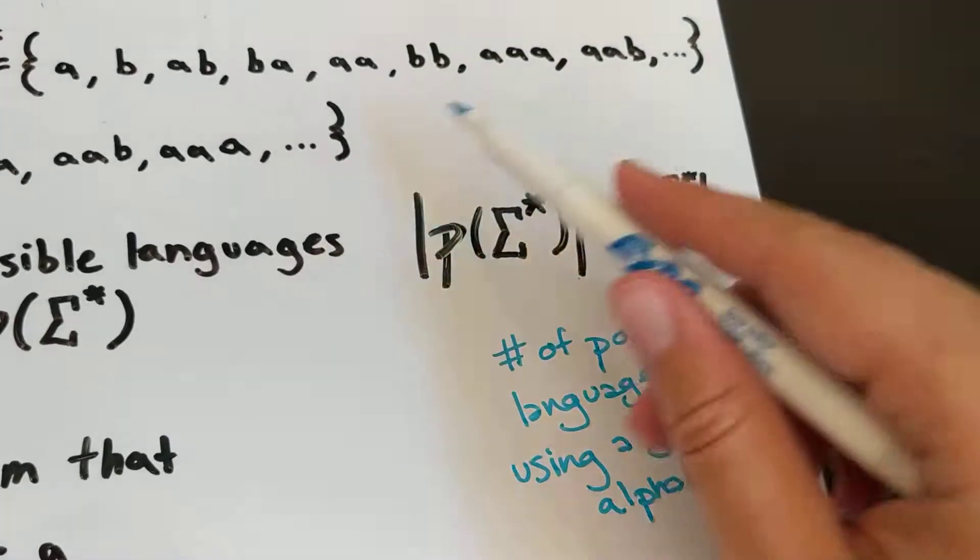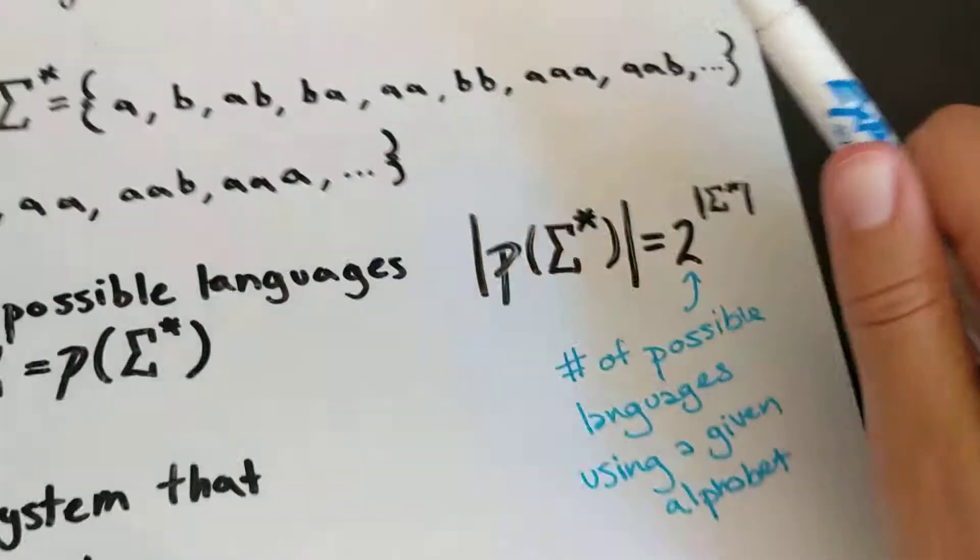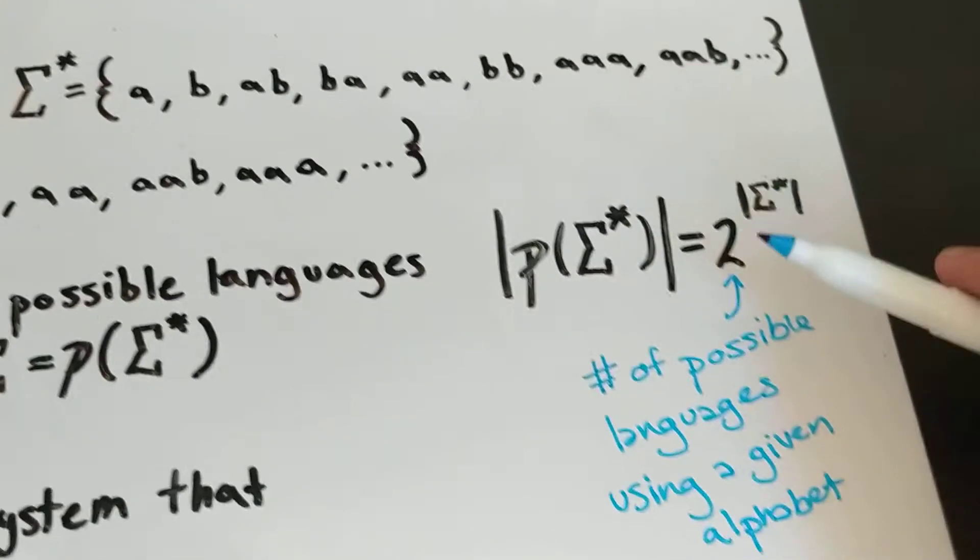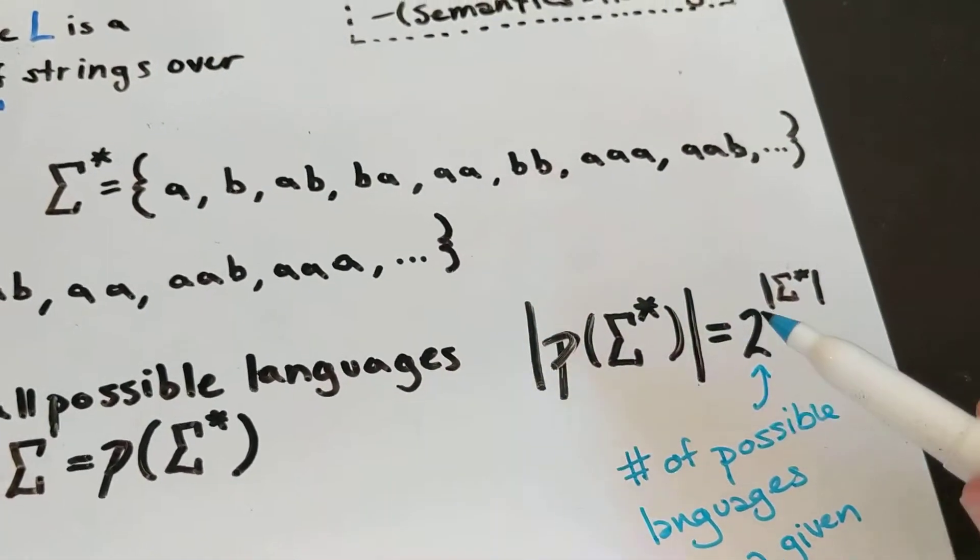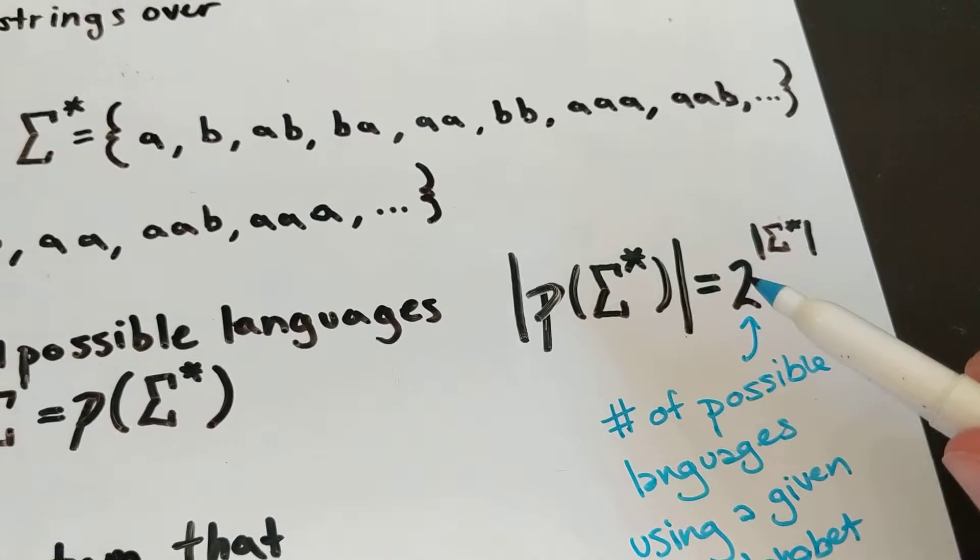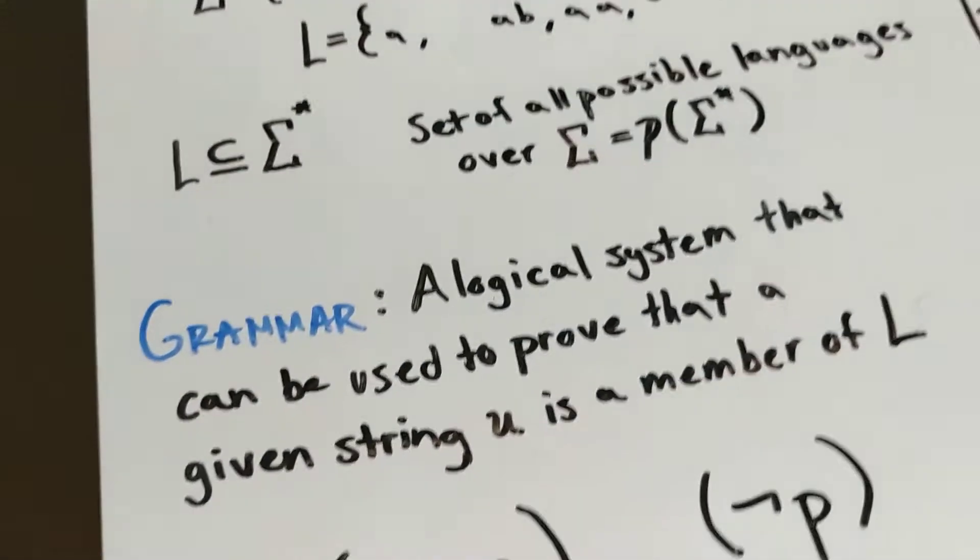So if you're curious about the number of possible languages, now usually this will be infinite in the cases that we're going to be talking about, but it wouldn't necessarily have to. I don't know, maybe it would be infinite always.